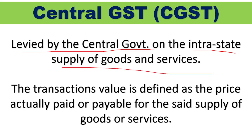CGST is levied by the Central Government on the intrastate supply of goods and services. Intrastate means within one particular state — if any transactions or supply of goods and services happens within that state, CGST levied by the Central Government will be imposed. The transaction value is defined as the price actually paid or payable for the supply of goods and services, and on that value only, the tax will be applicable.